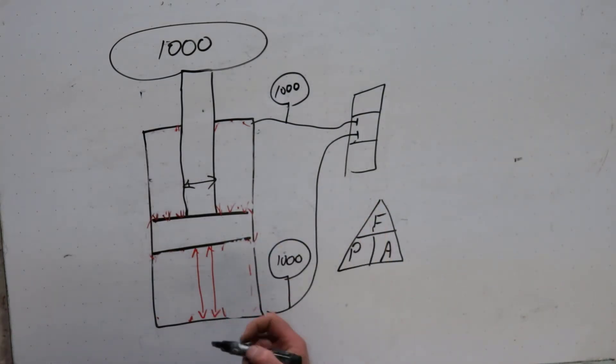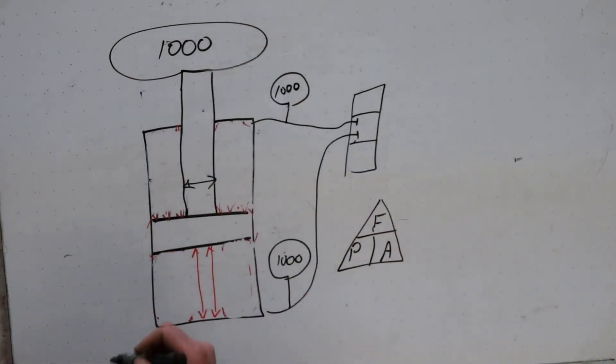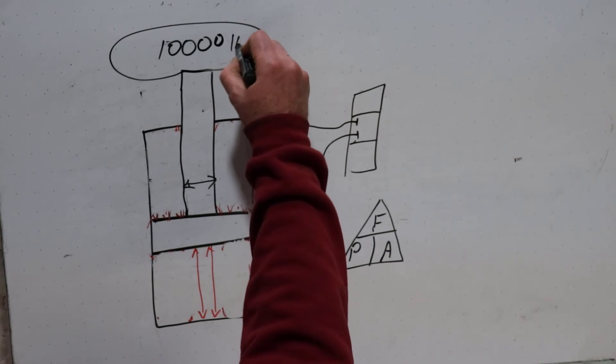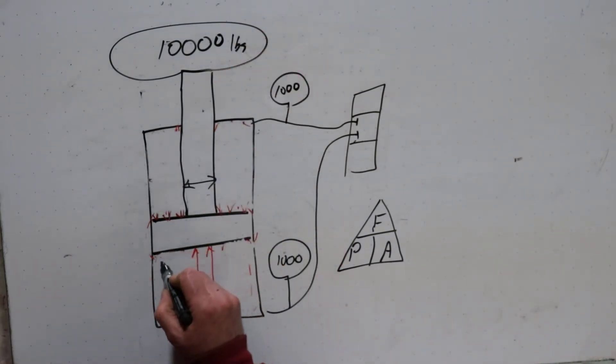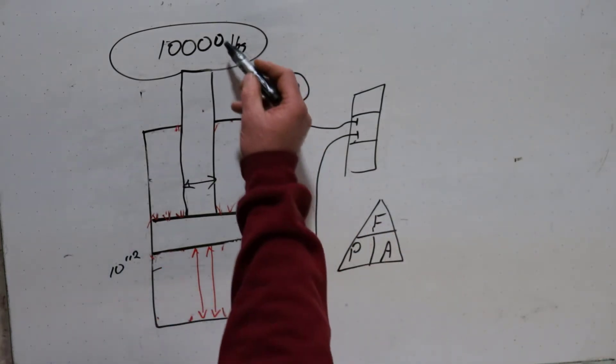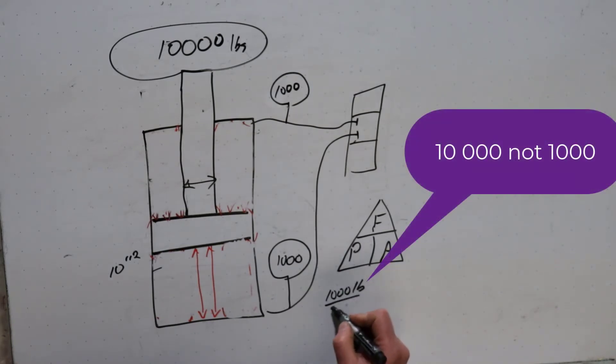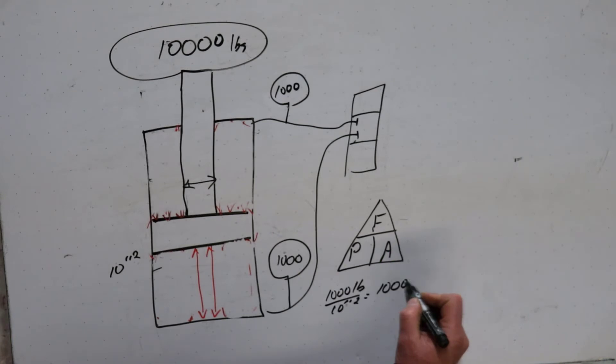So just for a math example, let's say this is 10,000 pounds of force. The piston, the full bottom, all the area around here, let's say it was 10 inches squared. So the pressure is force divided by area, 10,000 pounds divided by 10. That equals 10,000 pounds divided by 10 inches squared equals 1,000 pounds per inch squared.